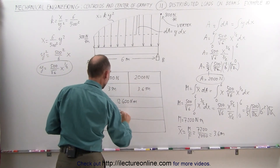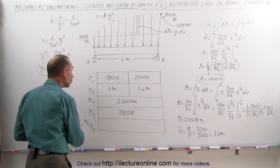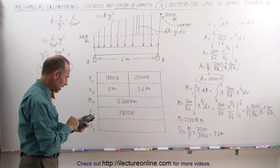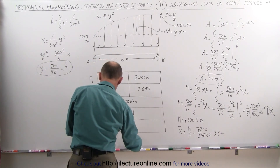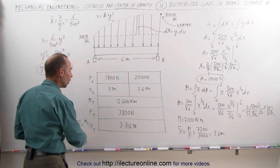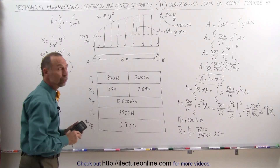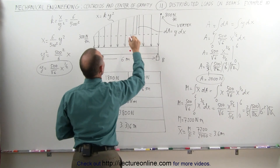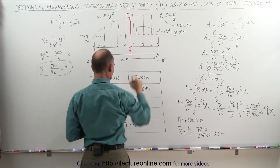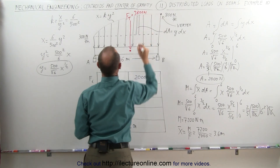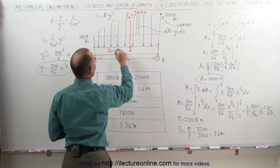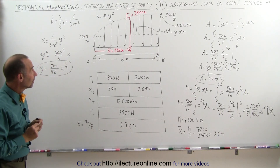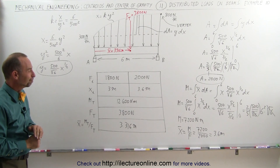The total force is the sum of both portions: 1800 plus 2000 equals 3800 newtons. To find the x-coordinate of the centroid of the entire load distribution, we divide the total moment by the total force: 12,600 divided by 3800 equals 3.316 meters. That is the x-coordinate of the centroid, just past the halfway point of the beam, with a total force of 3800 newtons acting at 3.316 meters from the left. And that's how we find the total force, the moment, and the x-coordinate of the centroid.